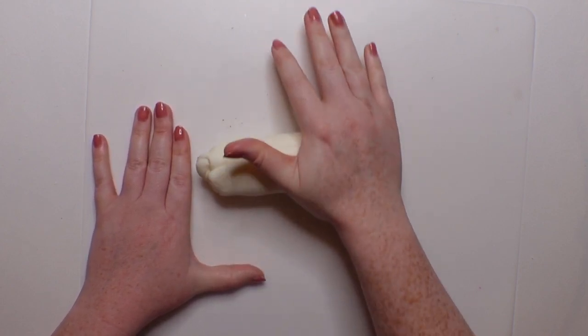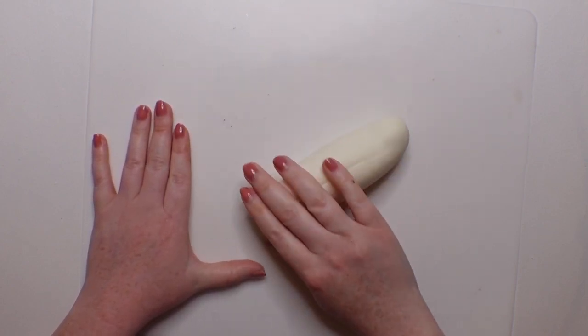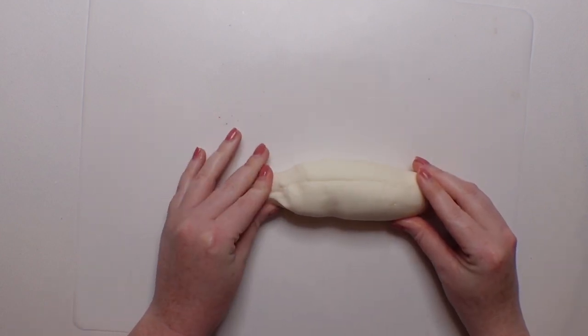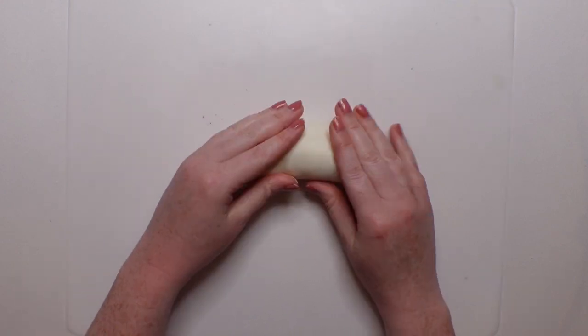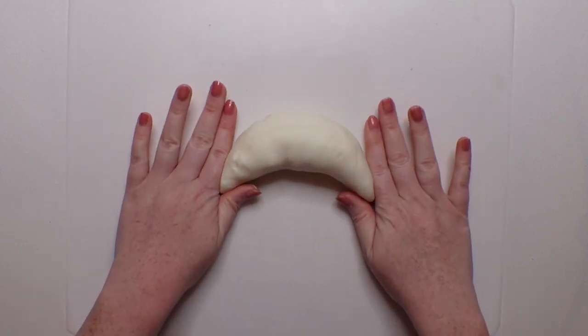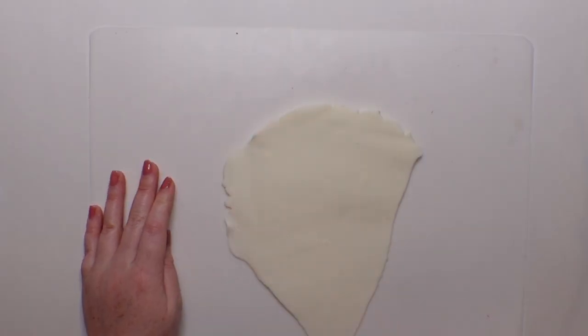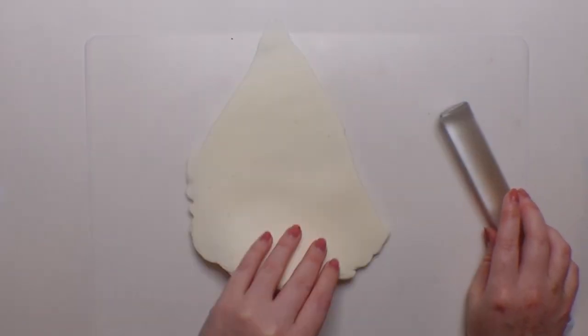I rolled the clay into a log about the length of the croissant I wanted, then started focusing on tapering off the ends. Then it's time to add the classic crescent shape by just bending the sides down a little bit to give the illusion that the croissant had actually been rolled up.